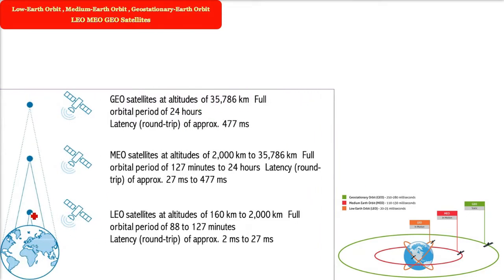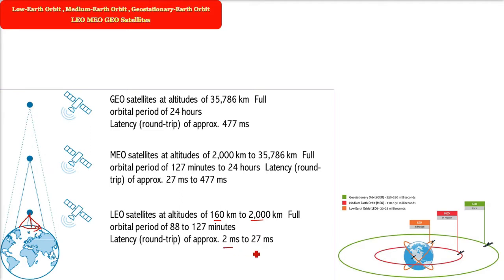First we will start with LEO. LEO satellites are at an altitude of 160 km to 2000 km. The full orbital period — the time to complete a full orbit — is around 88 to 127 minutes. The latency, that is the round trip time for a signal sent and received, is approximately 2 ms to 27 ms.